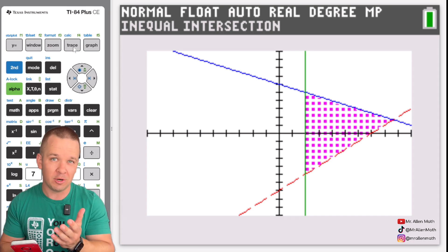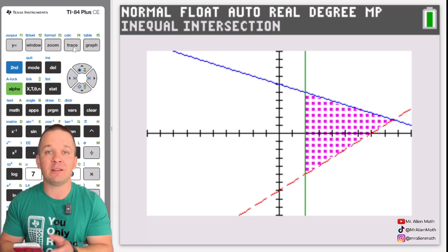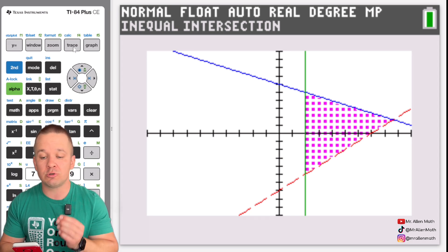You'll also notice maybe in a little more detail now that the red line is indeed dashed as you know we had the y equals that we did that one as strictly greater than.